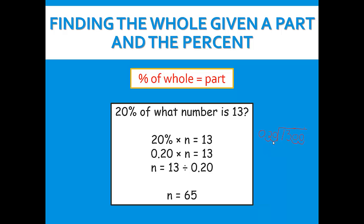20 will not go into 1, and 20 will not go into 13. So we're going to divide 20 into 130. 20 goes into 130 six times, and 6 times 20 is 120. When we subtract we get 10. Now we bring down our zero, and 20 goes into 100 five times. 5 times 20 is 100. When we subtract we get zero. So our answer is 65 — n equals 65.